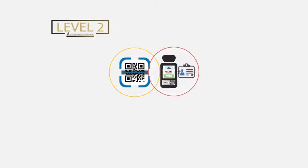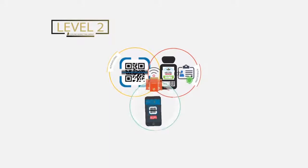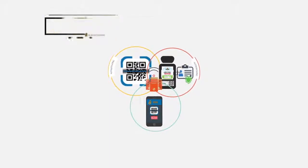Level 2 authenticates the relationship in Level 1 and then connects that to the server used with our phone app to verify the tag on the product.